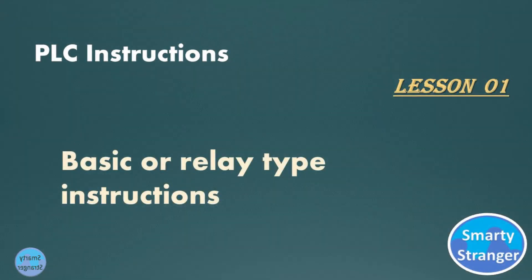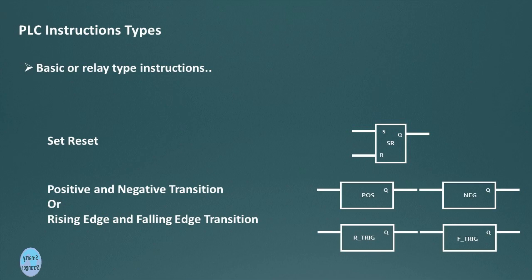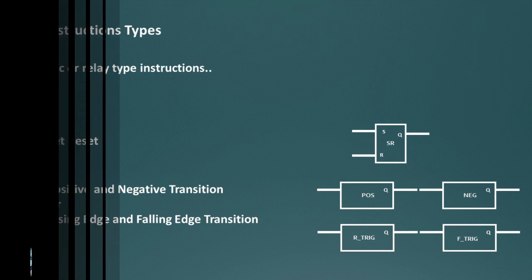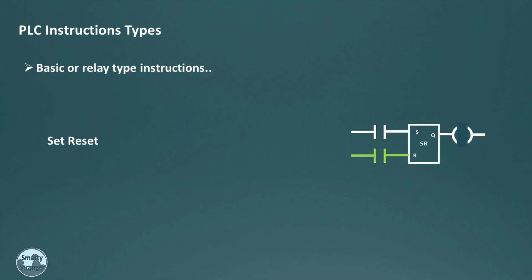Now we will talk about other basic or relay-based instructions: set and reset instructions, and positive and negative transition — also called rising edge and falling edge detection instructions. In the set-reset instruction, if the condition at the S input is momentarily on, the corresponding bit in the output data memory is set high and remains high until the R pin is set to high.